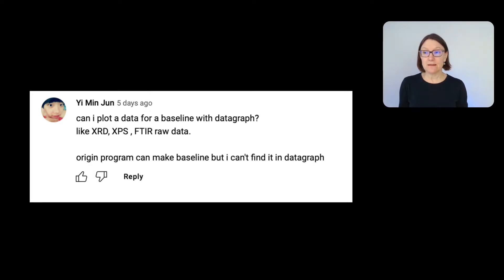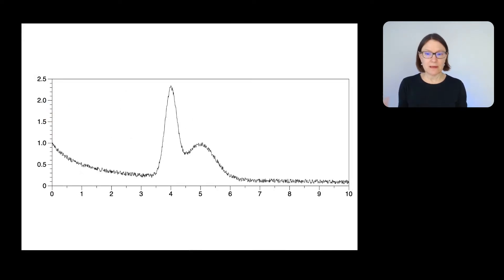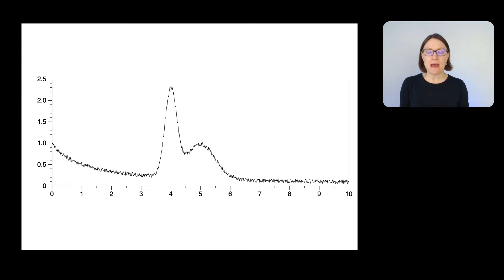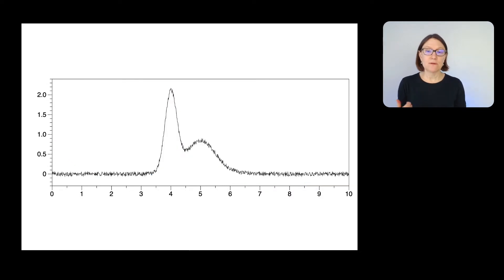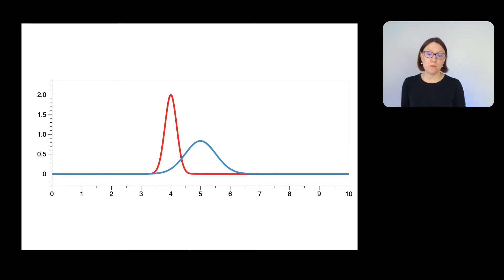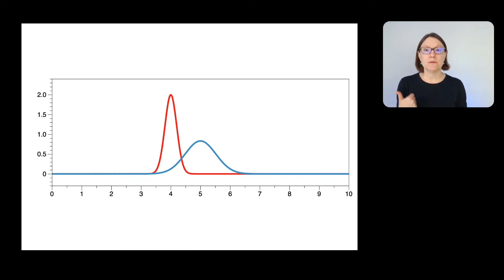To illustrate how you do this in Datagraph, I created a simple example dataset with a couple of peaks and a drifting signal. I'm going to show you how to fit a baseline to this data, subtract that baseline from the data, and plot the individual peaks. This last functionality is in the beta version, but everything else is in the current release version of Datagraph.